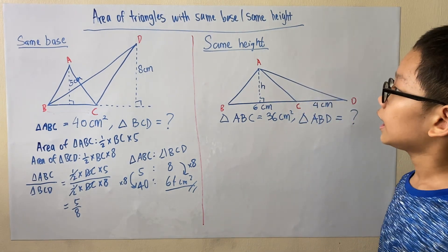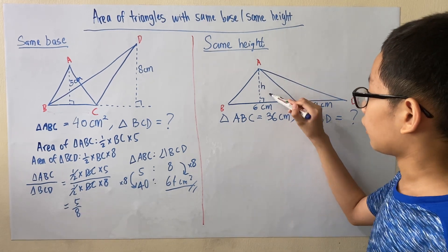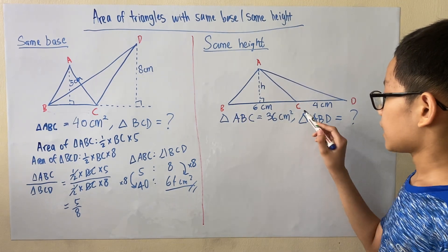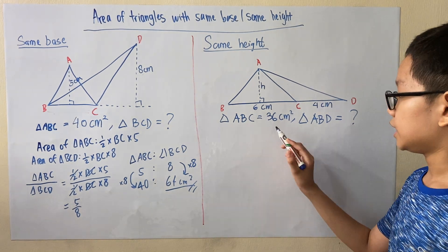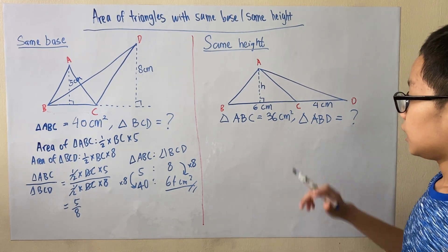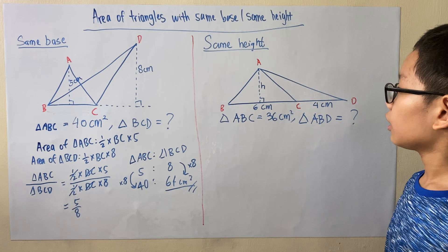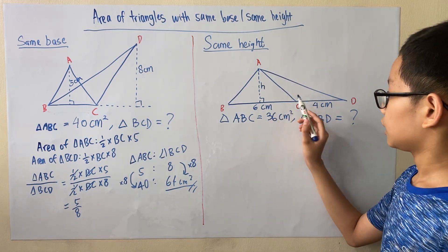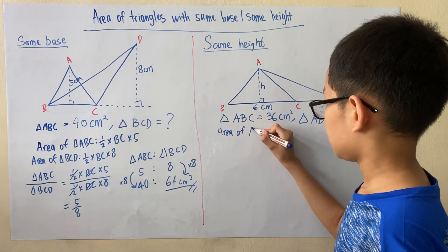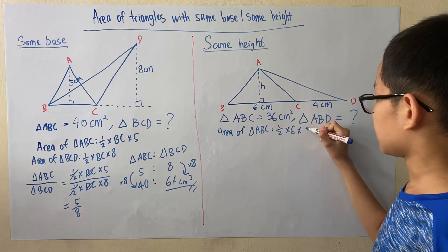Now let's look at the next part. We have triangle ABC and triangle ACD. Both of them have the same height H, however both have different bases: BC which is 6 cm and CD which is 4 cm. We know that the area of triangle ABC is 36 cm² and we want to find the area of triangle ABD, which is the whole triangle. The area of triangle ABC is half times base 6 cm times height H.